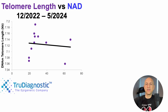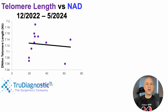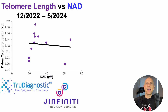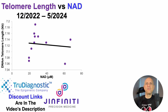To generate that data, I sent it to TrueDiagnostic. As a quick side note, the epigenetic estimation of telomere length may be a better measure than standard ways to measure telomere length, at least in terms of all-cause mortality. If anyone is interested in seeing that paper, I'll post it in the video's comments. On the x-axis, we've got NAD — blood intracellular levels of NAD — generated through GINFINITY. If you want to measure your own telomere length or NAD levels, there are discount links in the video's description.